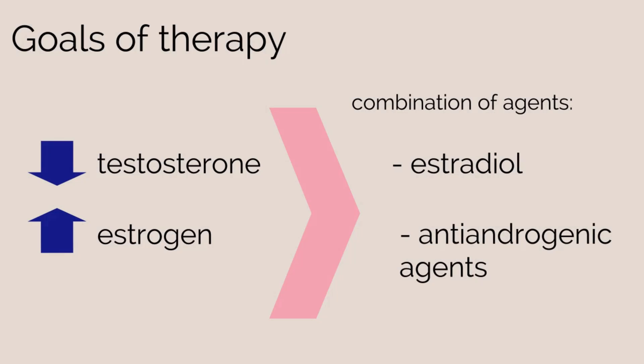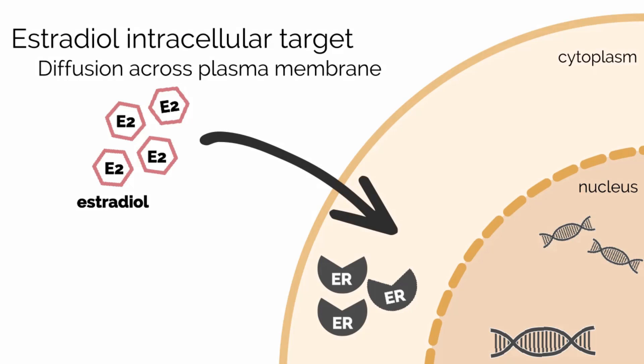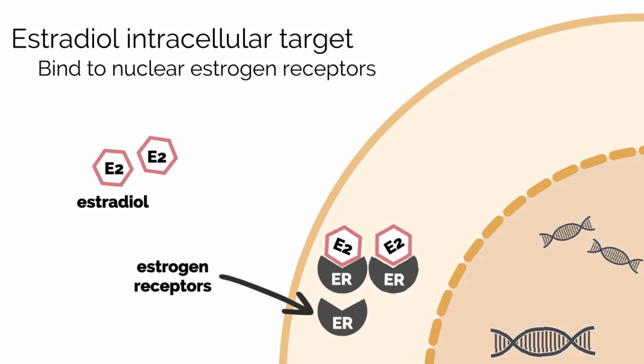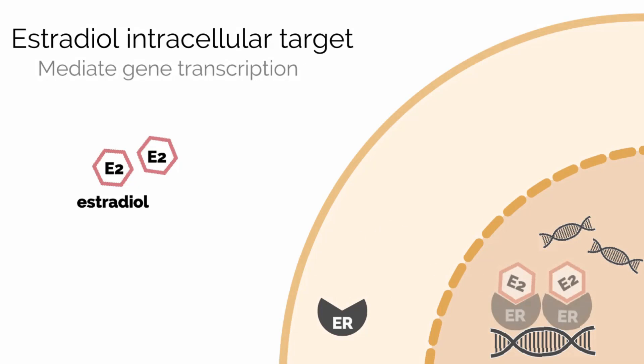The mechanism of action for estrogens is similar to testosterone. Estrogens, being lipids, enter the cell through diffusion across the plasma membrane. Once inside the cell, they primarily act on nuclear estrogen receptors to mediate gene transcription. Additionally, antiandrogenic agents such as spironolactone are often used to inhibit secretion and activity of testosterone, which allows for lower doses of estrogen therapy.